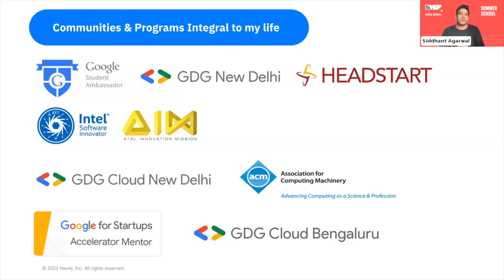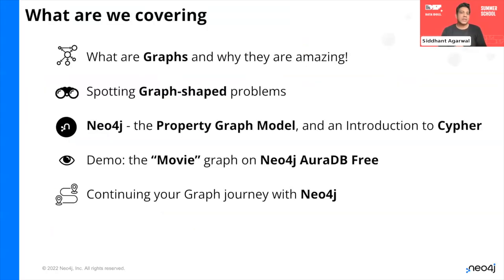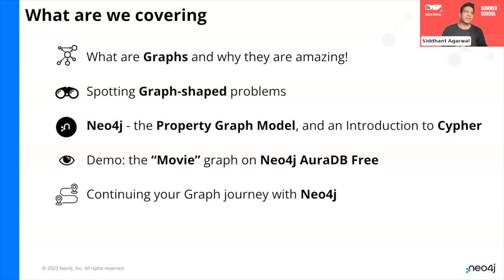I'm very excited to talk to you about this interesting topic called 'Graphs Are Everywhere.' Here's a brief on what we're going to cover today: what are graphs and why they are amazing, how to spot a graph-shaped problem, the Neo4j property graph model, an introduction to Cypher, and if we have the luxury of time, a demo on a movie graph dataset. Towards the end, I'll talk about a couple of CTAs for you to take back to continue your graph journey with Neo4j.